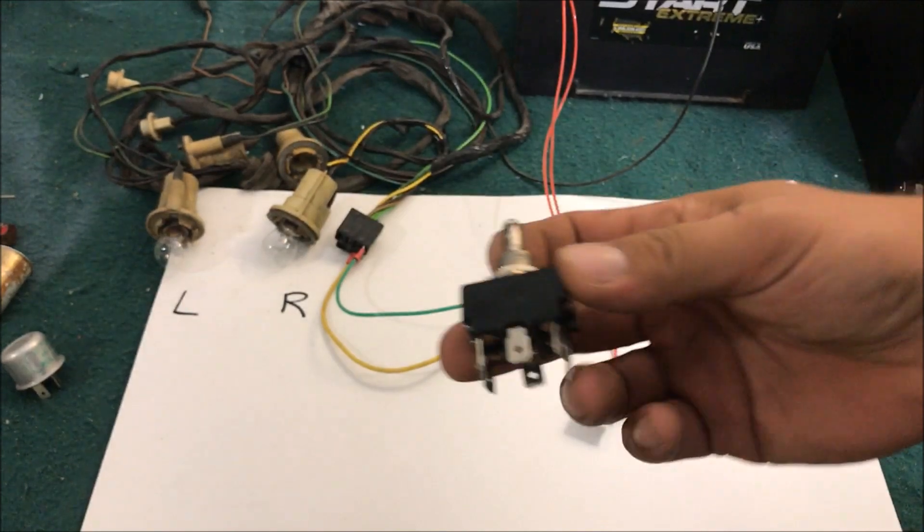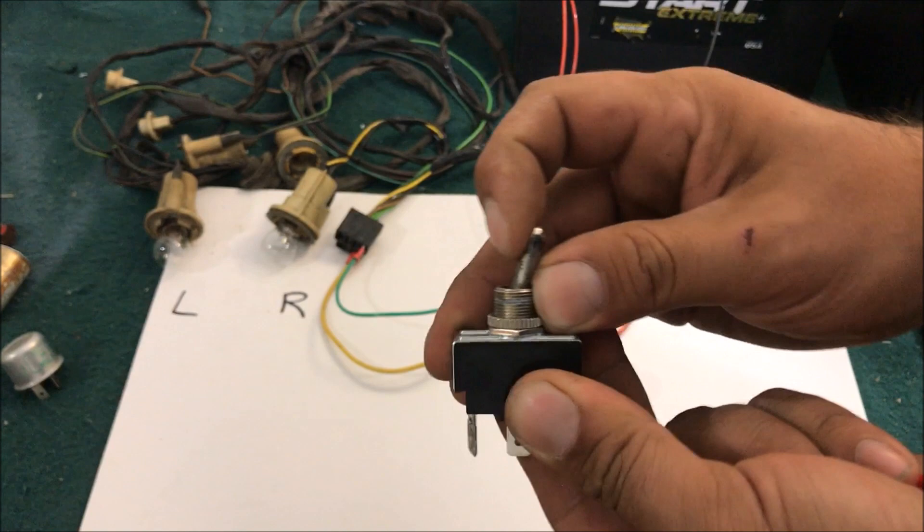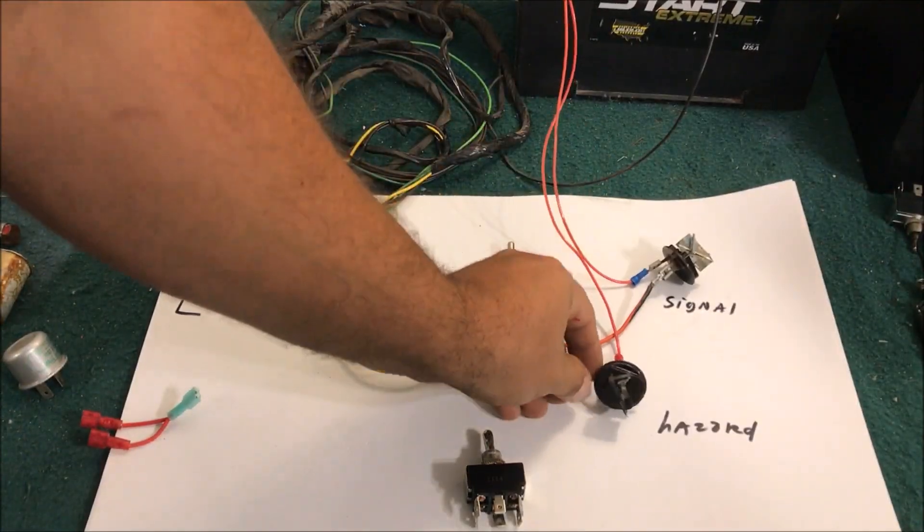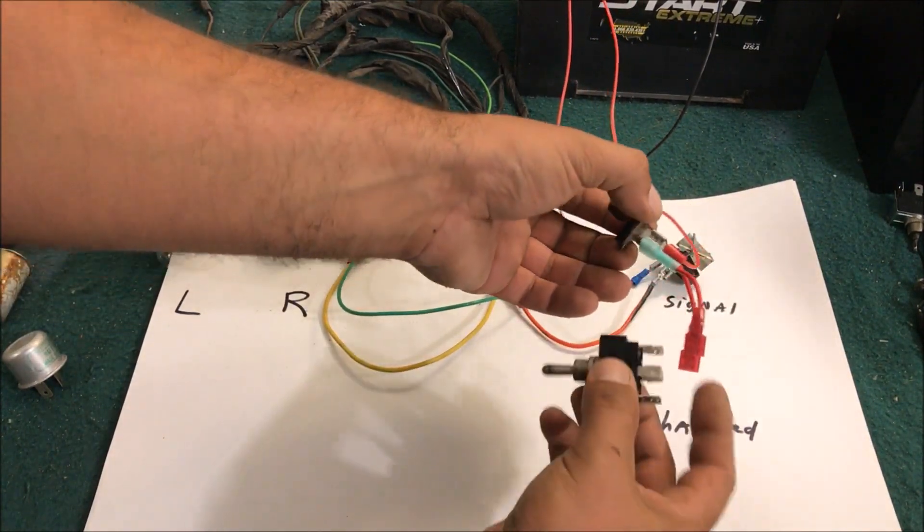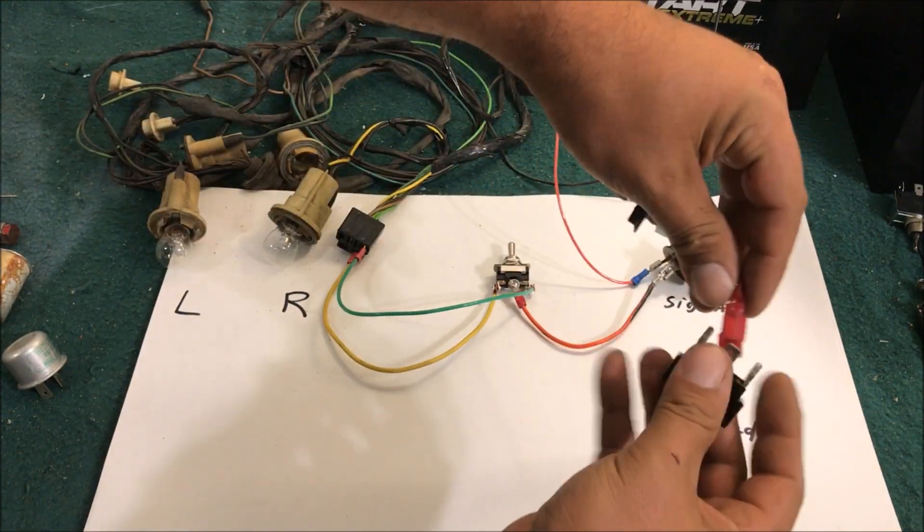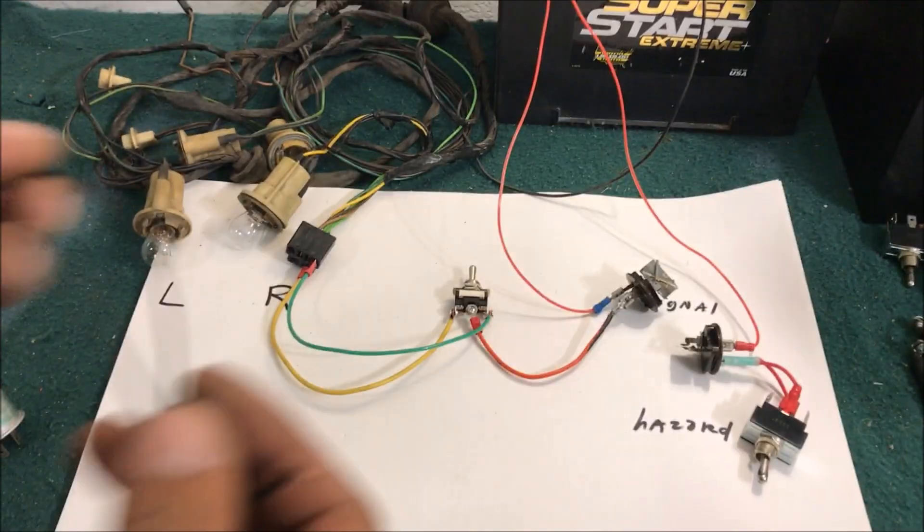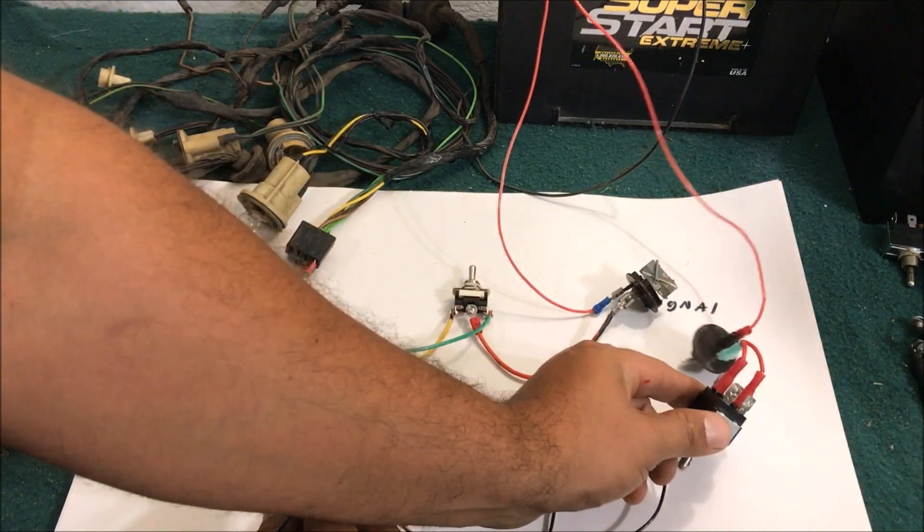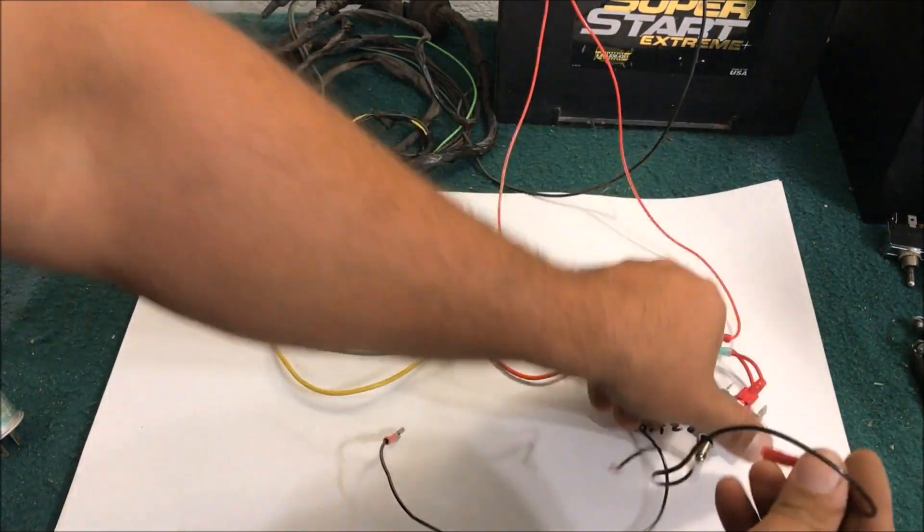So I couldn't find a double pole single throw, so this is a double pole double throw. So this would be off, hazard lights on, and we're only using these four. So we got power going to our hazard flasher. Now we're going to split power up and send it to the double pole single throw switch, so both of these are going to go to the center just like that, off the battery.